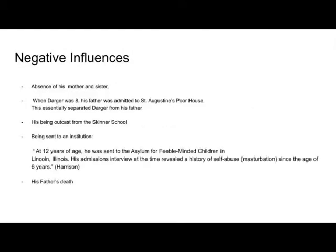Darger had also written about the many formative events of his childhood. Most notably were the negative events, such as the loss and absence of his mother and sister at a very early age. Darger had written about his mother passing away from complications during his sister's birth, and he had also written about his sister being given up for adoption in his autobiography.